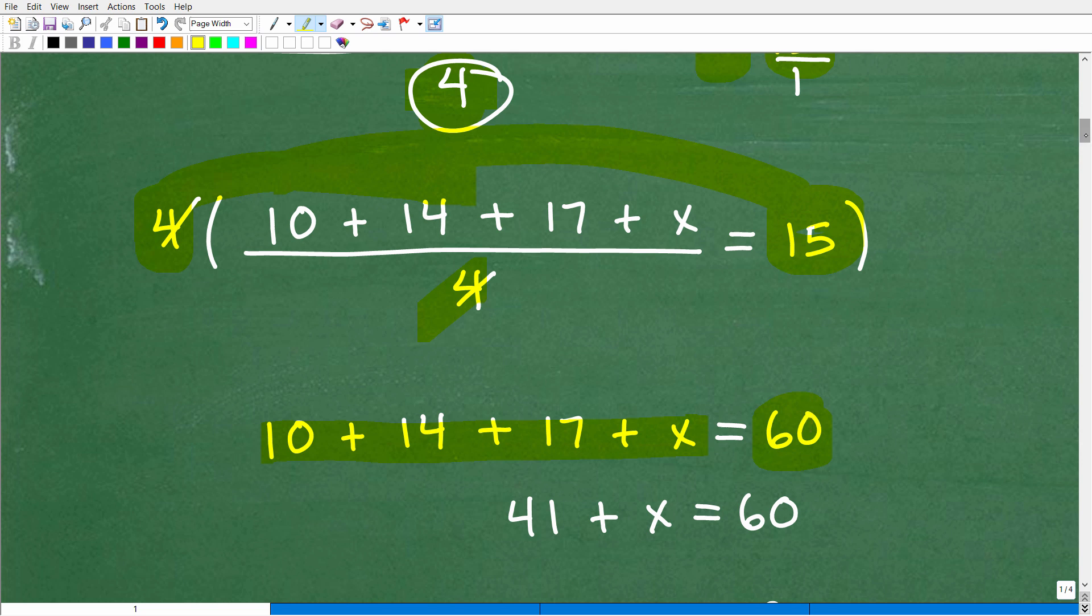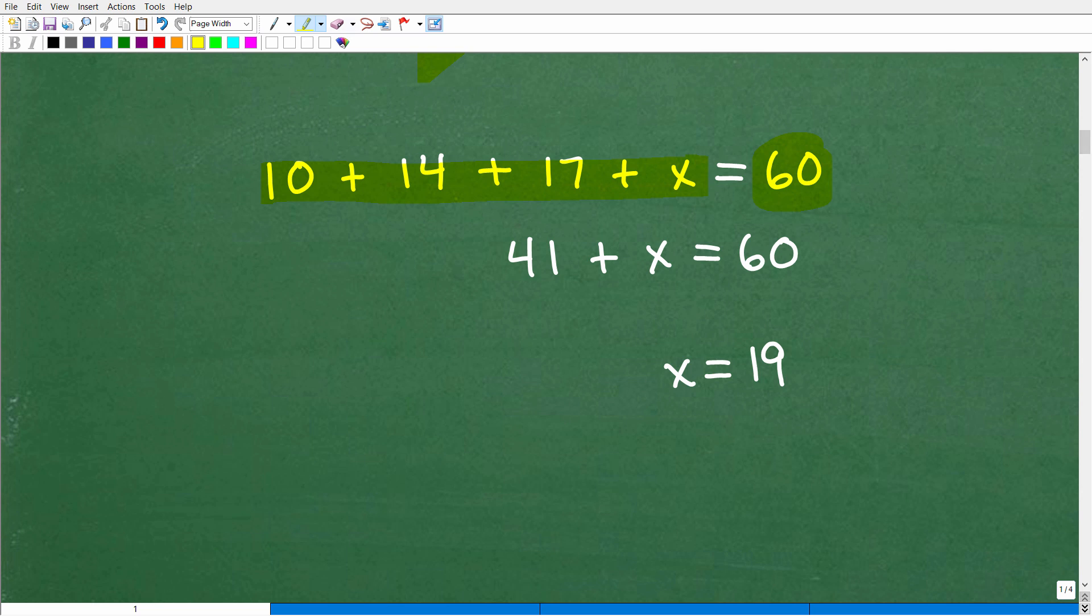So now, if you're with me and you're like, okay, this makes sense, then the rest of this should be pretty easy. Now, we're going to combine, add up all the numbers. So, 10, 14, and 17. That's 41. 41 plus x is equal to 60. I simply need to just subtract 41 from both sides of the equation. And when I do that, I get x is equal to 19, which is the answer.